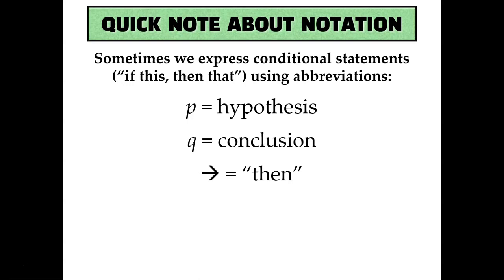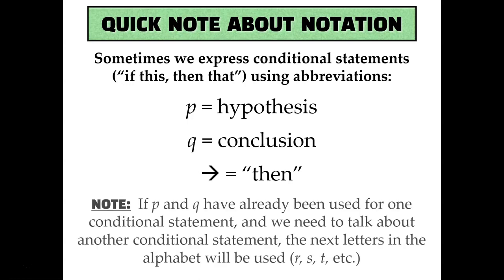So P is your hypothesis, then you put an arrow in between to mean 'then,' and Q is your conclusion. Part of the reason we chose P and Q instead of H and C is just that P and Q are alphabetical. So if you have more than one conditional statement, you can go in alphabetical order and say the next hypothesis is R, S, T, and so on.